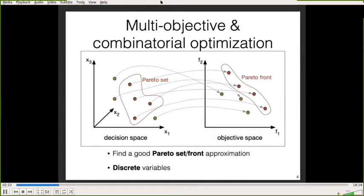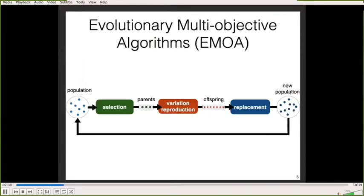The goal is to find a good approximation of this Pareto front. Because we are in the context of combinatorial optimization, all variables of our solution are discrete. There is a category of algorithm called evolutionary algorithm that manages a set of solutions during its process, and this category seems perfect to find a good approximation of the Pareto set.